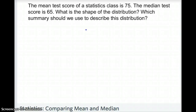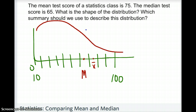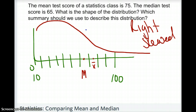For a different problem: the mean test score is 75 and the median test score is 65. We mark 65 as the median and 75 as the mean on the scale. Since these numbers are not close, it's not symmetrical. Remembering that the mean goes closer to the tail, we get a distribution that is right skewed. Because it's skewed, we use the median as our center — which in this case is 65.